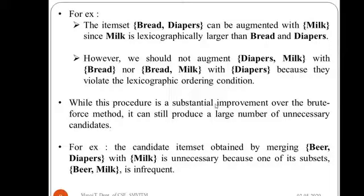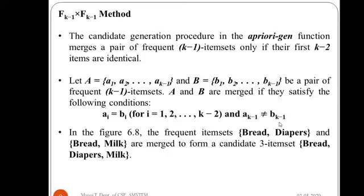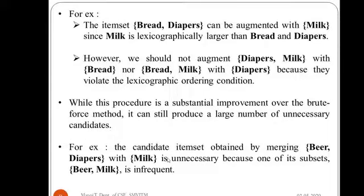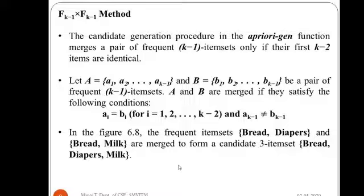This procedure brings substantial improvement over the brute force method. However, there are high chances that it generates a large number of unnecessary candidates. For instance, the candidate item set obtained by merging {beer, diapers} with milk is unnecessary because {beer, milk} is already infrequent — there is no point generating {beer, diapers, milk}. There are heuristic methods available to avoid these unnecessary candidates, but we will not dwell into those.